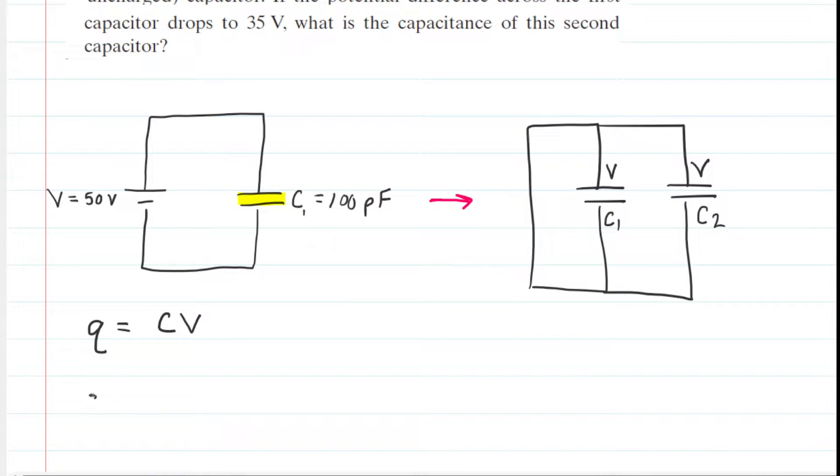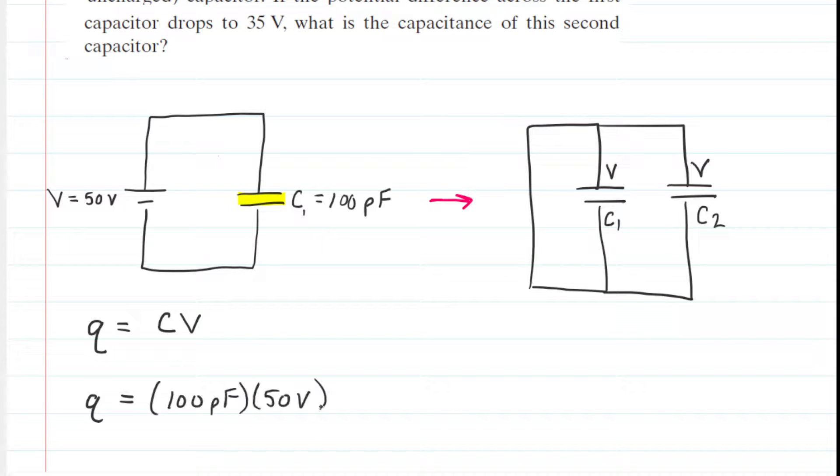So let's go ahead and do that by just plugging in the values of capacitance and potential difference. And when we compute this, we can see that the charge stored by the capacitor is going to be 5,000. And this will come out in picocoulombs rather than coulombs because we plugged in picofarads. So this is how much charge is stored on the capacitor initially.